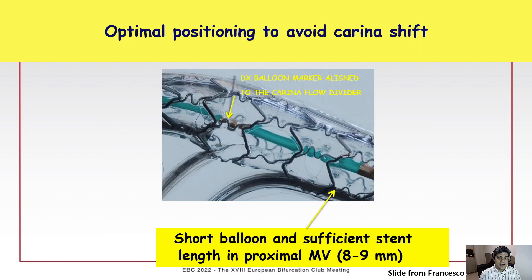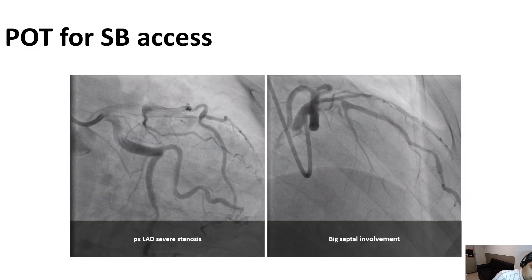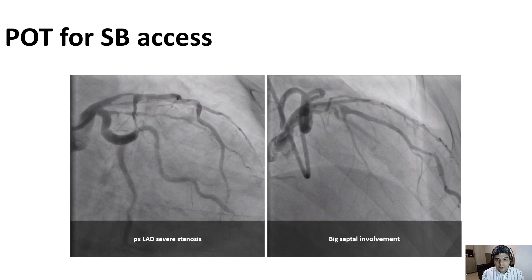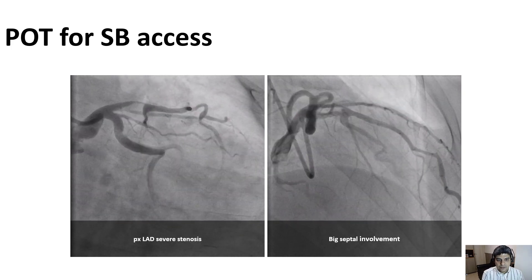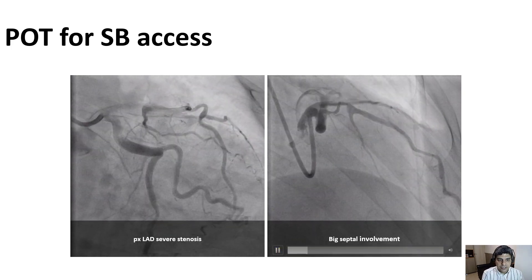I would like to start highlighting the importance of the good POT technique, which is crucial to open the struts across the side branch ostium, and this technique may facilitate side branch preservation. This is an example of how POT can help in opening or re-accessing the side branch during bifurcation PCI.